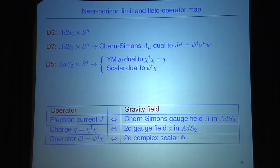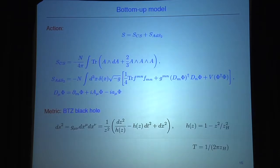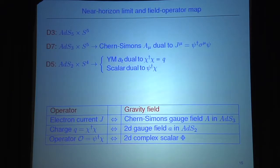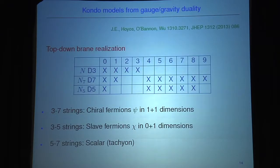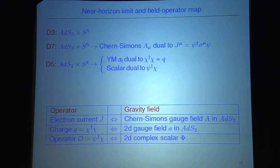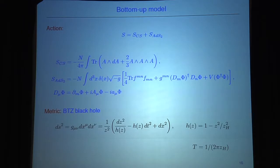Now here comes the point where we have to go from this top-down to the bottom-up approach, because the model just presented will be quite difficult to study and we are not quite sure what the potential is. Also in the probe limit these D5-D7 strings will be suppressed by an order of N, so they will be hard to see. We decided at this point to change to a bottom-up model.